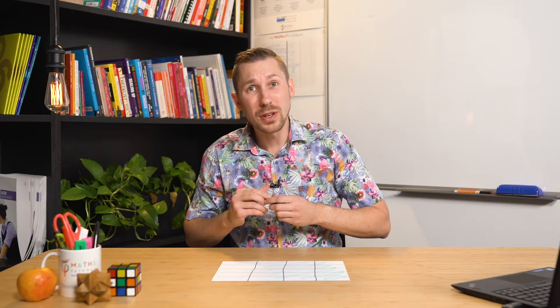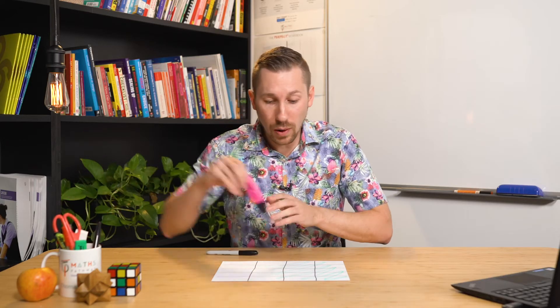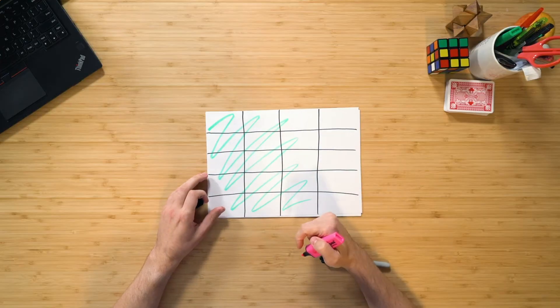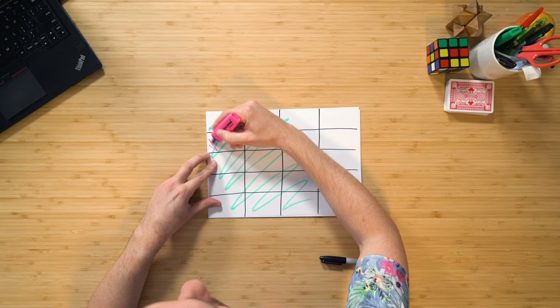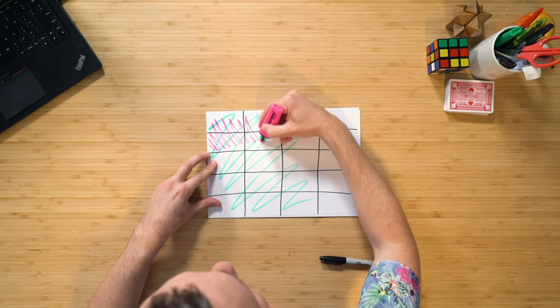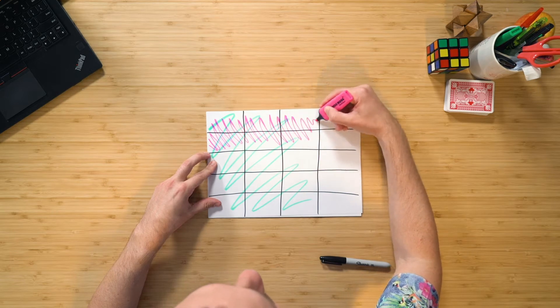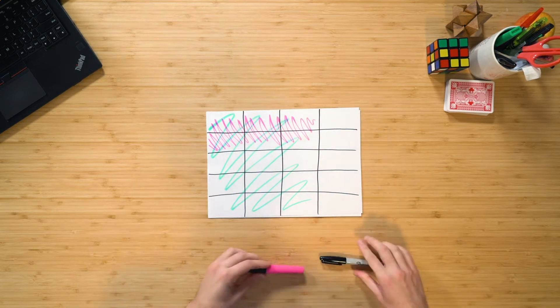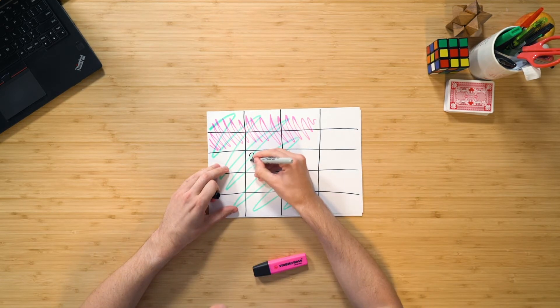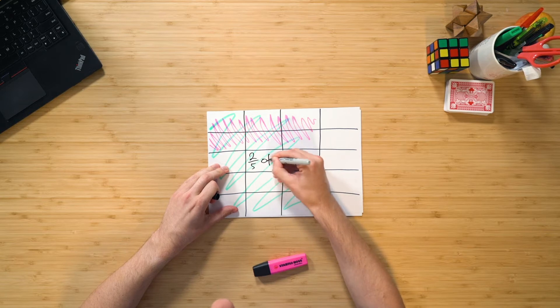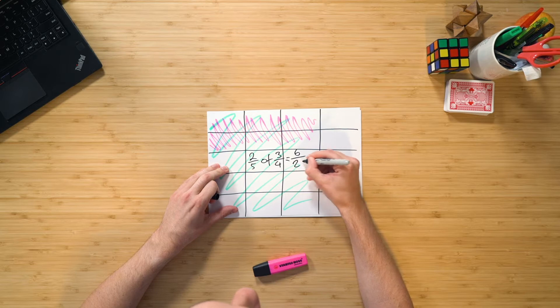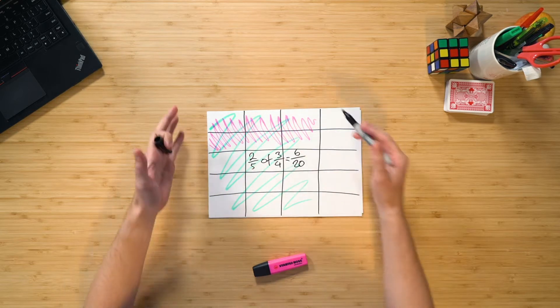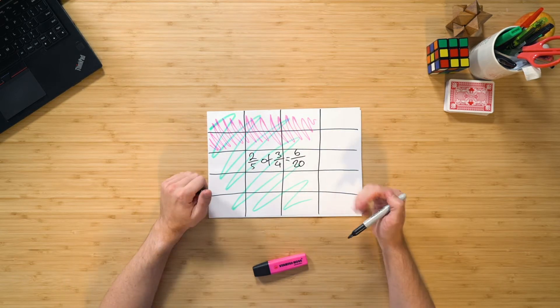Now we know that two fifths of the whole page, well, one fifth would be this row here. But two fifths would be these two rows. But I don't want the whole page, I want just the three quarters. So you can see here that two fifths of the three quarters is actually this section here. So therefore, we can see that two fifths of three quarters is actually equal to six twentieths, because I've got six pieces out of 20 equal parts on the whole page.